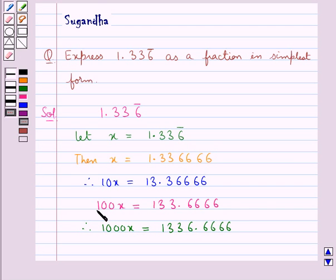We take this as equation 1, that is 100x is equal to 133.6666, and this as equation 2, that is 1000x is equal to 1336.6666.